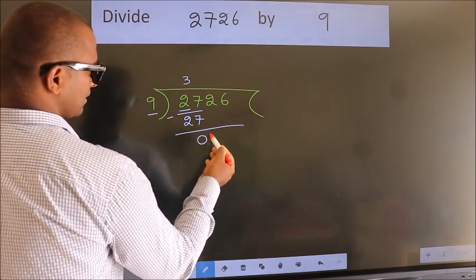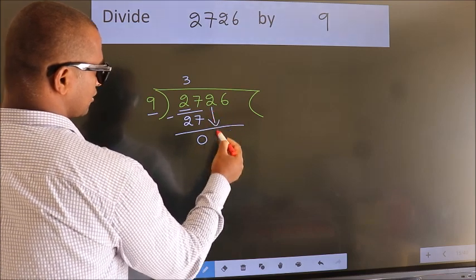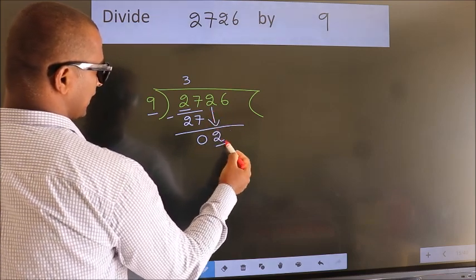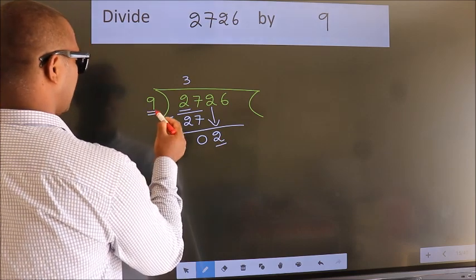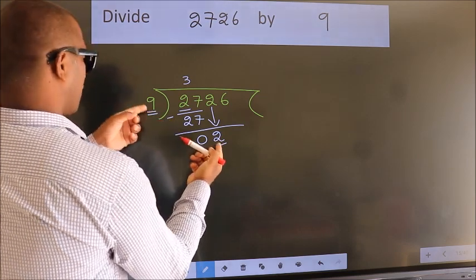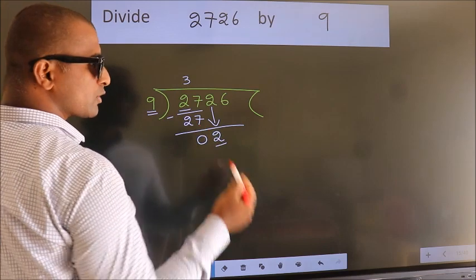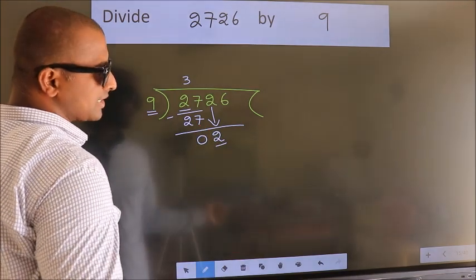After this, bring down the beside number. So 2 down. Here we have 2. Here 9. 2 smaller than 9. So we should bring down the second number.